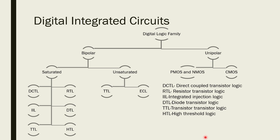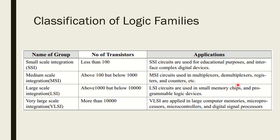Digital integrated circuits are categorized into two types: bipolar and unipolar. Bipolar is divided into two types: saturator and unsaturator. In the saturator type, there are six types: direct coupled transistor logic, resistor transistor logic, integrated injection logic, diode transistor logic, transistor-transistor logic, and high threshold logic. In the unsaturator type, it includes TTL (transistor-transistor logic) and emitter coupled logic. Unipolar is divided into PMOS, NMOS, and CMOS.